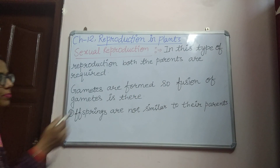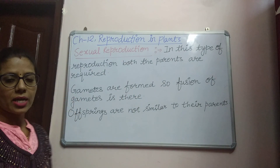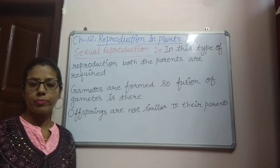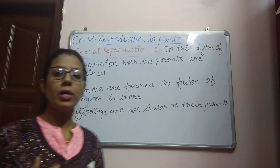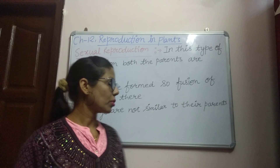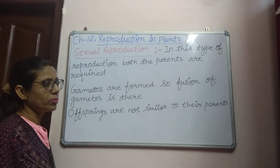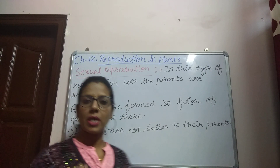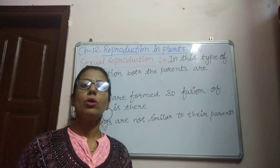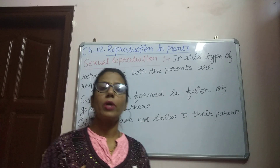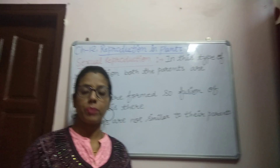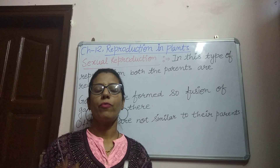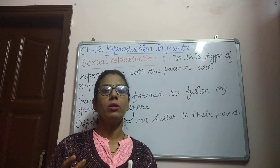Since both parents are required, gametes will be formed — male gametes and female gametes. So fusion of gametes takes place: male and female gametes will be fused, and a new offspring will be produced.